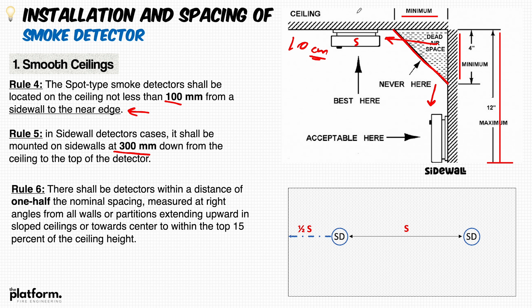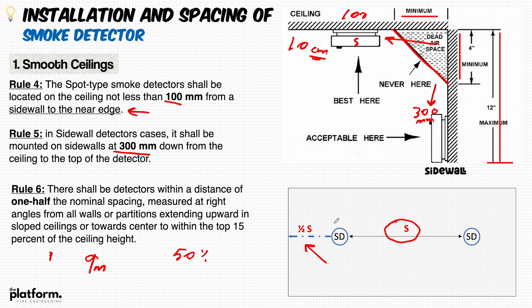To avoid the corner: if installing horizontally on the surface, keep 100 mm minimum from the wall; if installing on the side wall, keep 300 mm down from the ceiling. Rule number six: the distance of the smoke detector from the wall shall be a maximum of half the nominal spacing — 50 percent of nine meters, which equals 4.5 meters. So the minimum distance to the wall is 10 centimeters and the maximum is 4.5 meters.